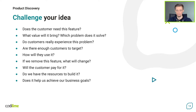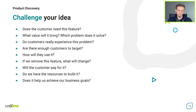For example: Does the user need this feature? What value will it bring? Which problems does it solve? If we remove this feature, what will it change? Do we have the resources to build it? The more questions you ask, the better, as answering these questions with assumptions and testing the hypotheses will reduce uncertainty in later stages. It's important to note that discovery should result in outcomes, not features and technical solutions. In practice, this can be understanding of the value, user personas, or KPIs.